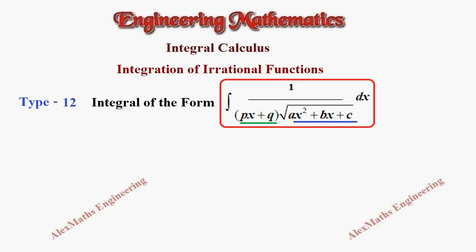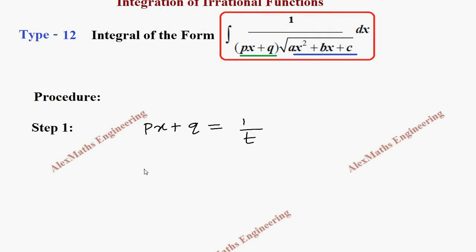As per the procedure, we have to take the linear term px + q as 1/t. Then we have to differentiate this. The differentiation gives p·dx = −(1/t²)dt, since q is constant. So from this we get dx, and px + q = 1/t — everything we substitute in the question to get the integral in terms of t.